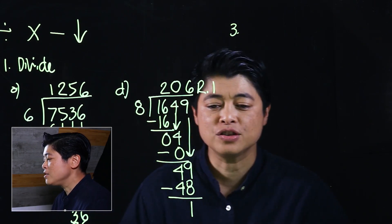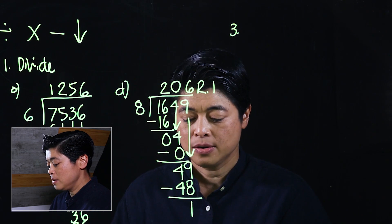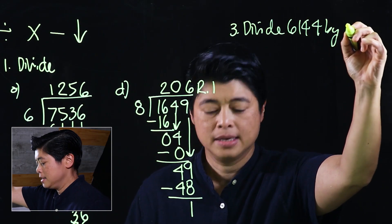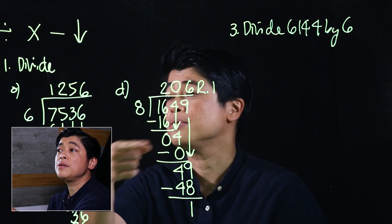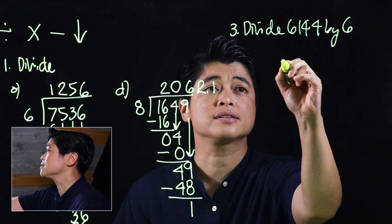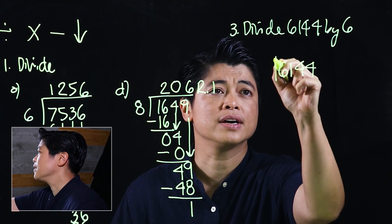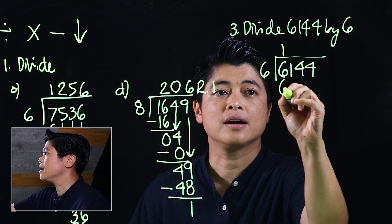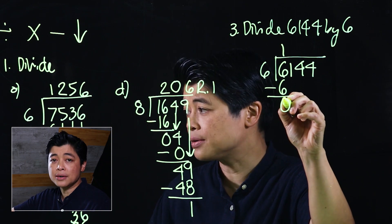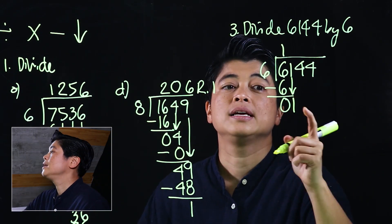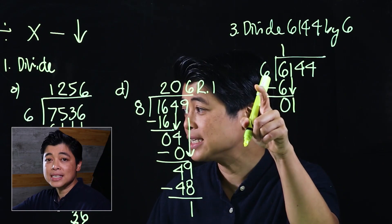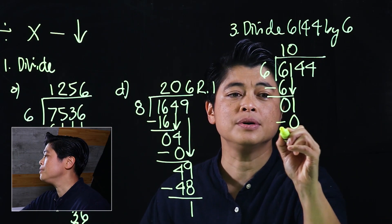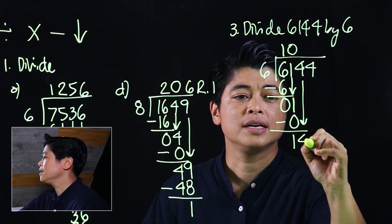Problem 3 on page 71 says: divide 6144 by 6. In earlier problems it was written computationally already, so here we write it out. Beginning the division process: 6 divided by 6 is 1, multiply gives 6, subtract gives 0, bring down 1. Then 1 divided by 6 cannot go — there are no 6s in 1 — so we multiply by 0, giving still a 1. Bring down the 4.